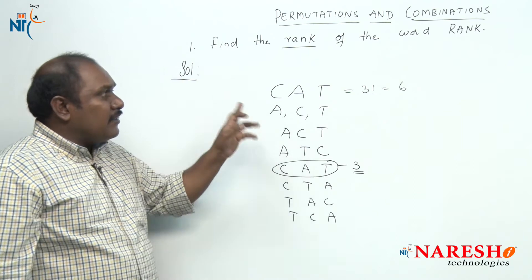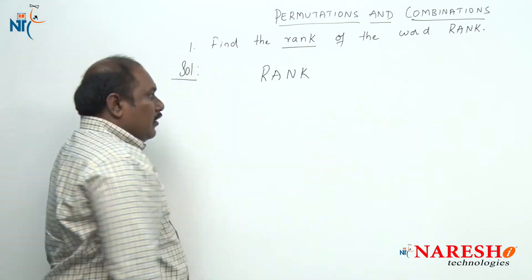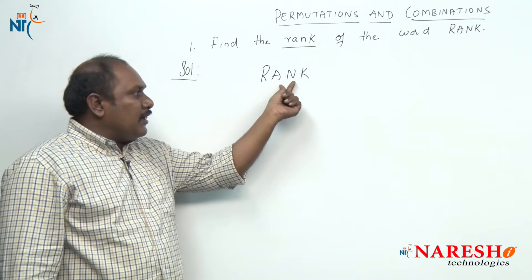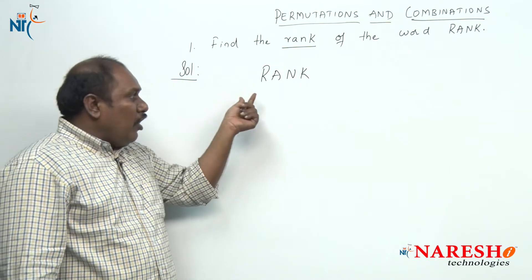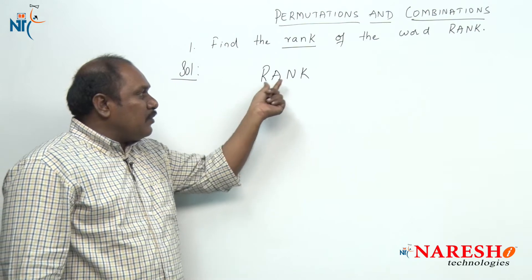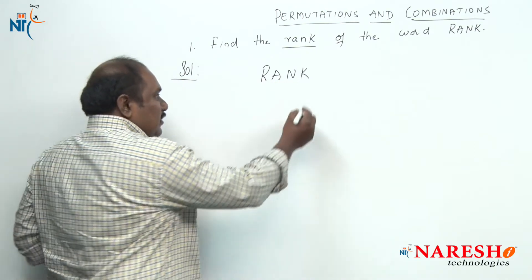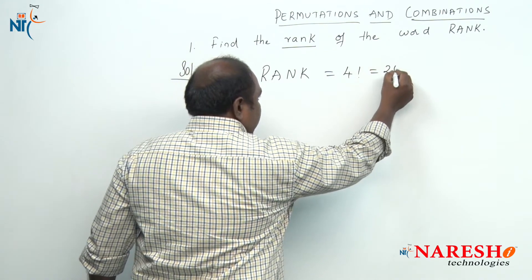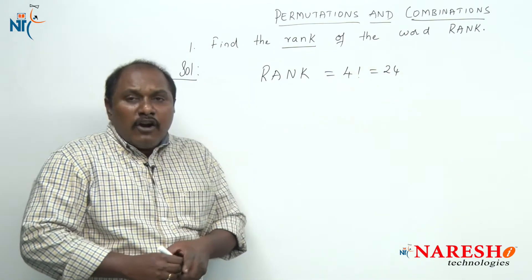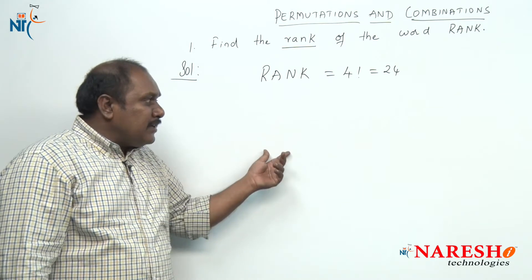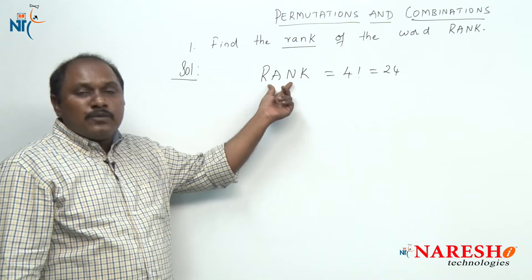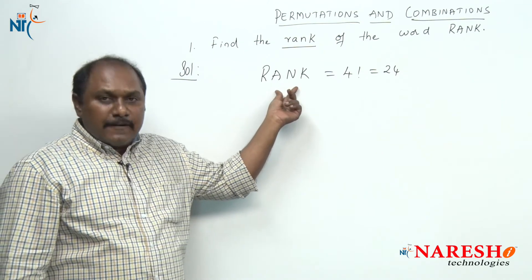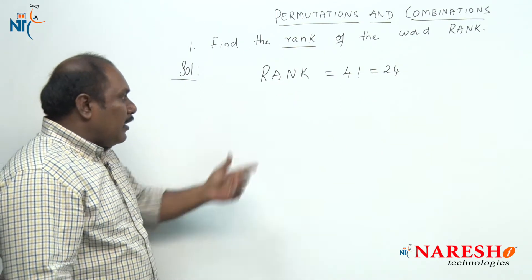Now let us try to find the rank of the word RANK. Coming to the word RANK, we have four different letters. In how many ways can we arrange the letters of the word RANK? It is four factorial ways, which is 24. But we cannot write all these 24 arrangements and then find the rank — it becomes a huge task. So, let us see logically what happens.